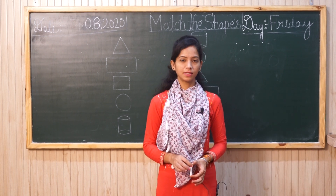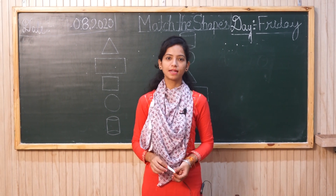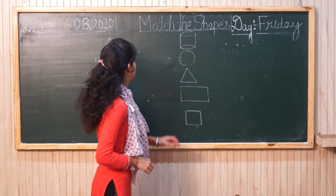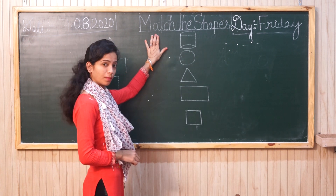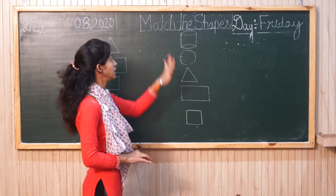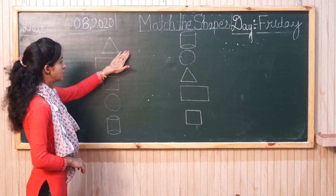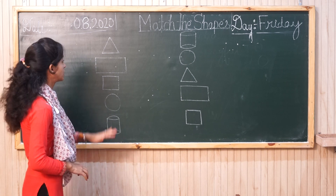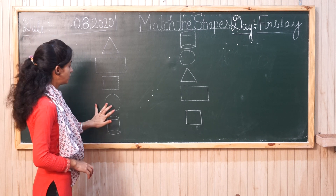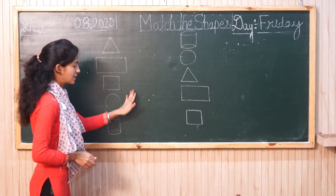Hello kids and their parents, how are you all? I hope you are all fine. Today's session is for Maths for LKG class. Today we will learn 'Match the Shapes.' In the previous class we learned some shapes: triangle, rectangle, square, circle, and cylinder.